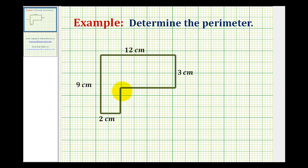We want to determine the perimeter of this L-shaped polygon. The perimeter would be the distance around the outside of this polygon. So to determine the perimeter of any polygon, we just need to find the sum of the lengths of all of the sides, or we need to add the lengths of all of the sides.